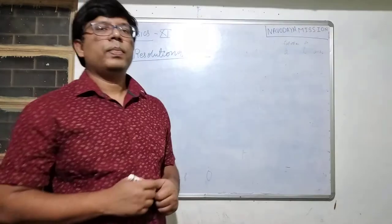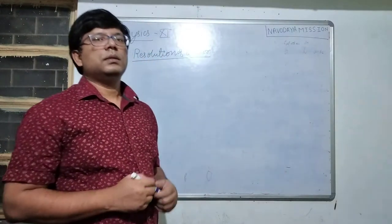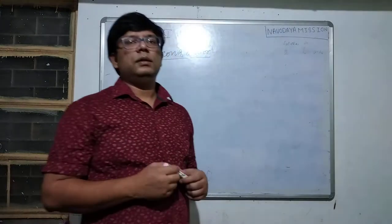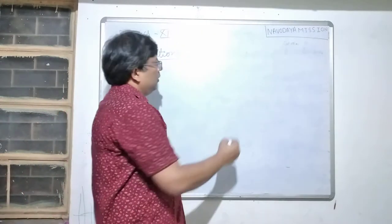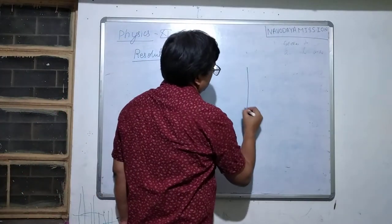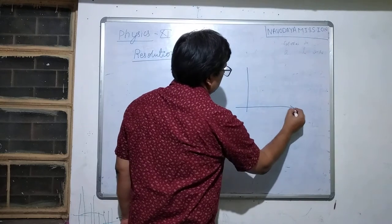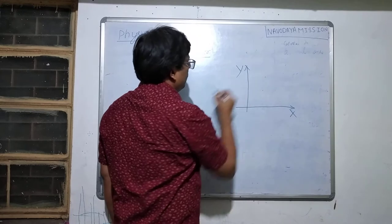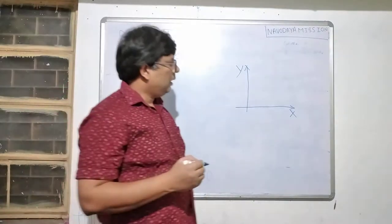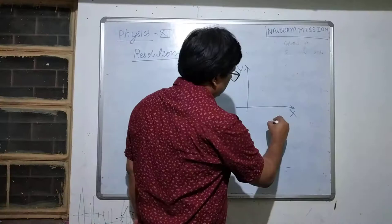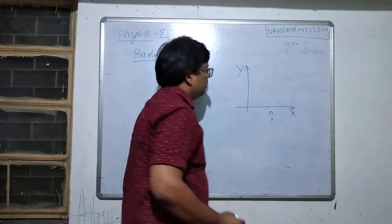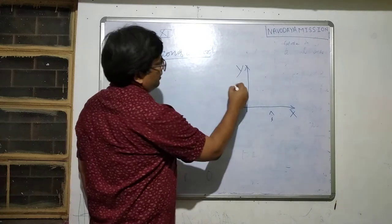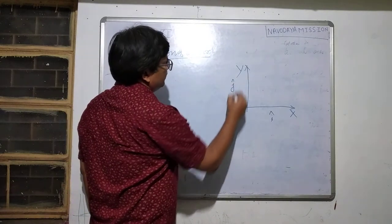Good morning, students. In the previous class, we have studied about the resolution of vectors in two dimensions. We have seen that in two dimensions we have two axes: x-axis and y-axis. The unit vector along the x-axis is represented by i-cap and the unit vector along the y-axis is represented by j-cap.